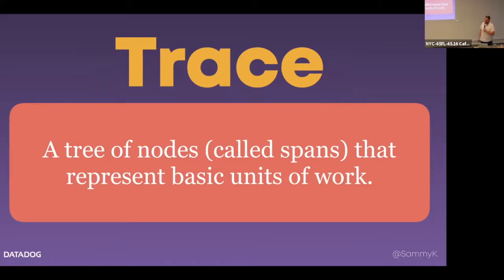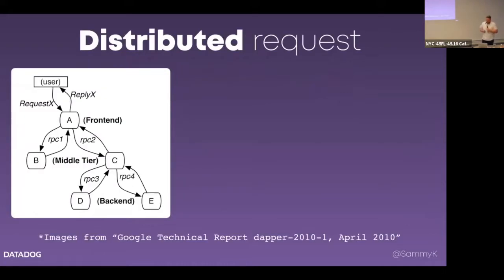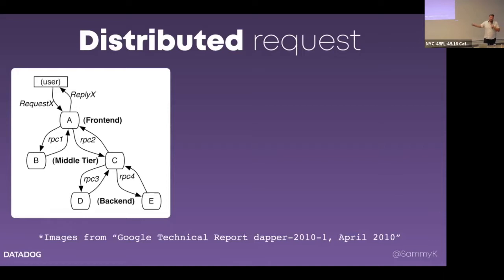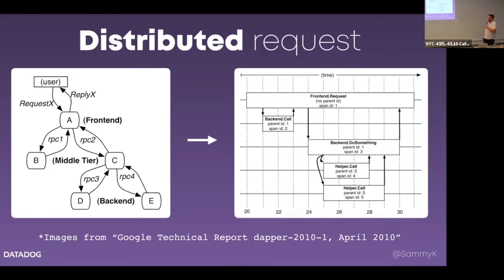If we see an actual example, it'll make a little more sense. I'm going to give you a little history here by showing a graph from a very famous paper called the Dapper paper. It was published by Google back in 2010, and they were trying to get visibility into their production stack. When you make a request in Google's infrastructure, the user would hit a server or service, and that might need to talk to service B, which needs to talk to service C, which needs to talk to D and E. Trying to figure out where this request is going and getting metrics on that is not straightforward. The goal is to get something you can look at to see performance bottlenecks and have a little bit more visibility.